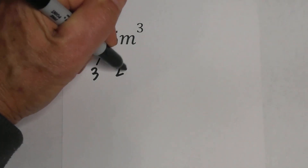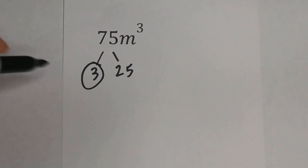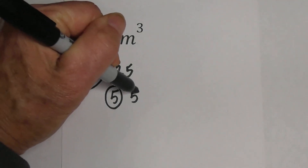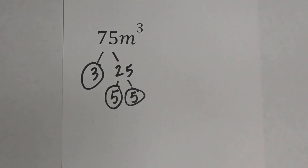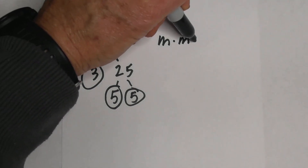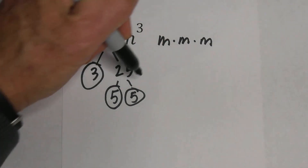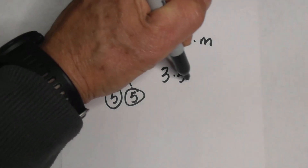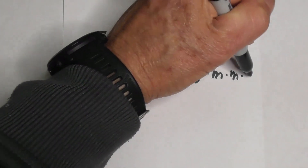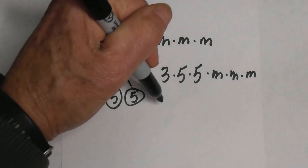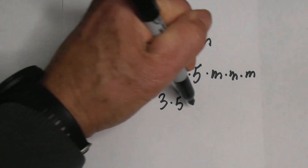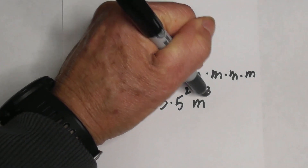We have 3 times 25 equals 75. 3 is prime, so I'm going to circle that, and then 5 times 5 equals 25. Now we can write m cubed out as m times m times m. So we could write this as 3 times 5 times 5 times m times m times m, or you could write it as 3 times 5 squared times m cubed.